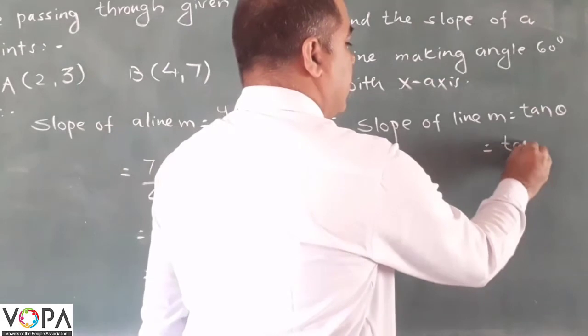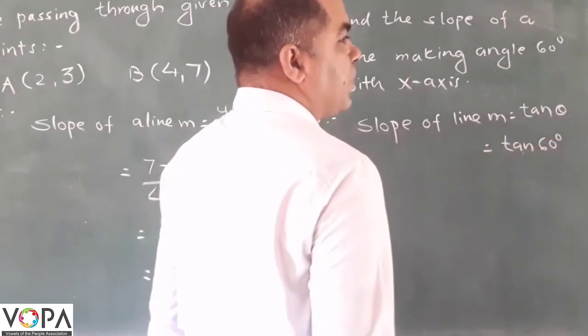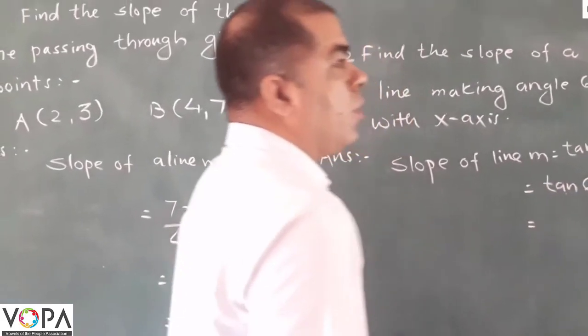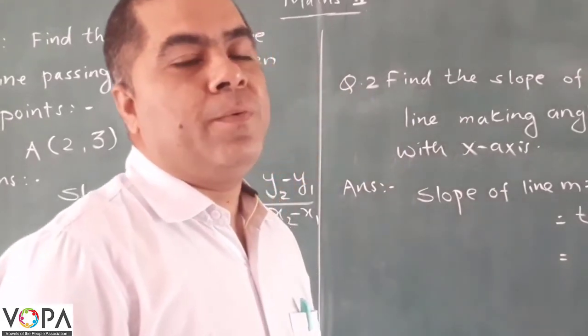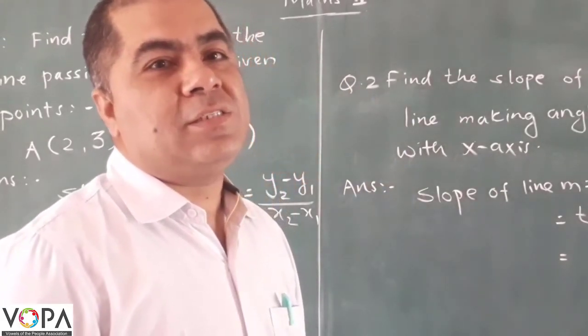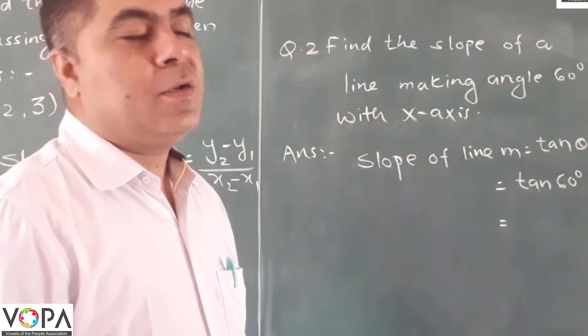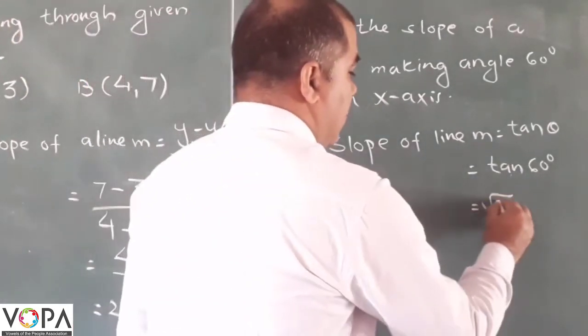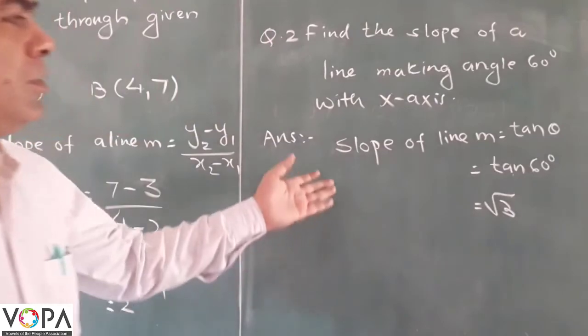Now, what is the value of tan 60 degrees? Yes, root 3. The answer is root 3.